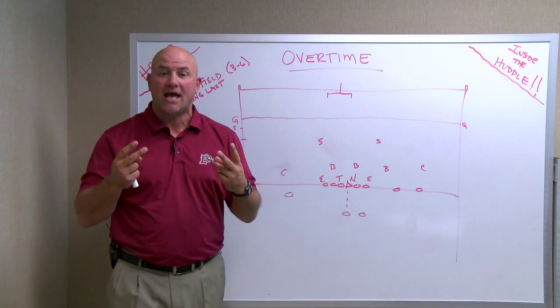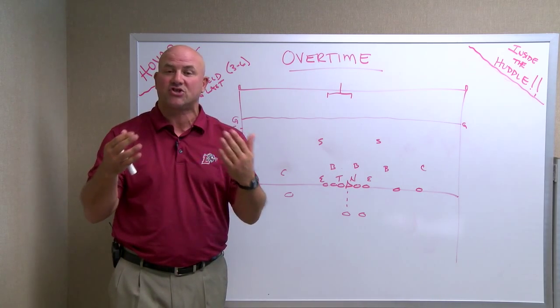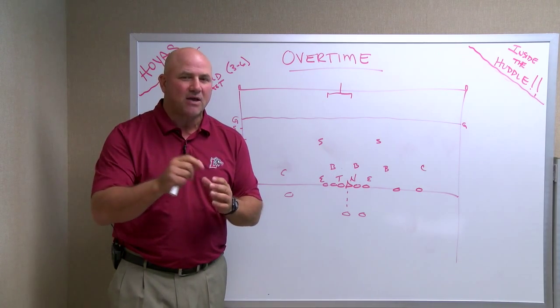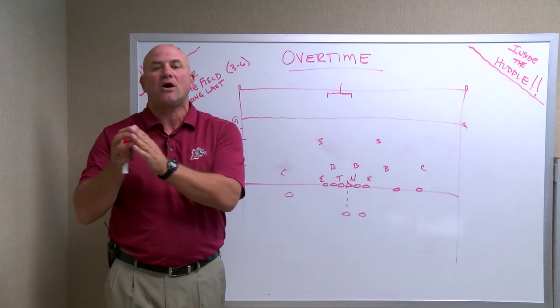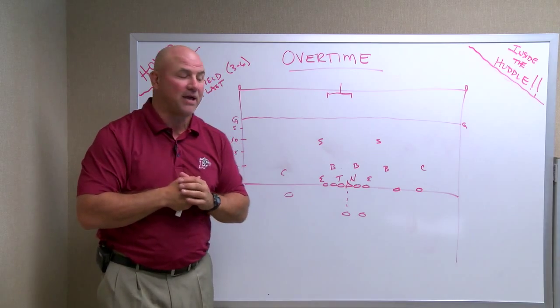When a team is tied at the end of regulation, you flip a coin again. The visiting team gets to call it. And usually the team that wins the toss, they want to be on defense first and on offense second, and I'll explain that to you in a little bit.